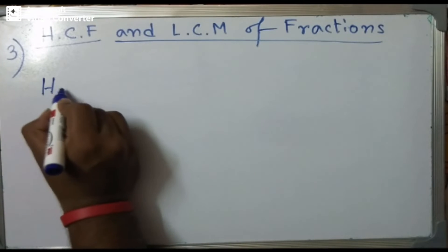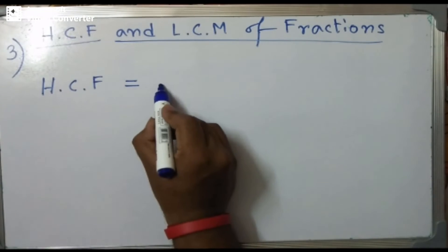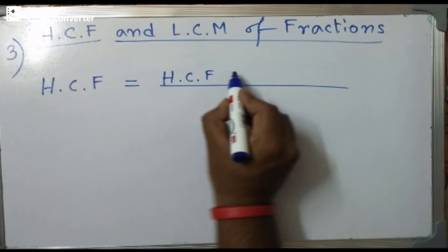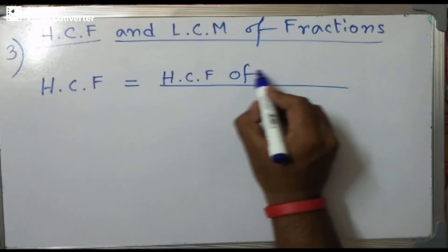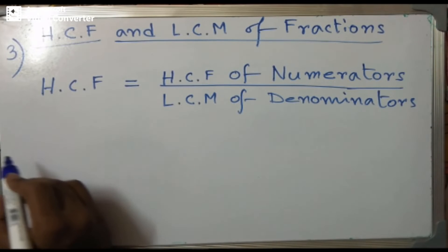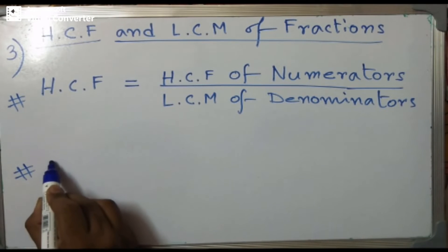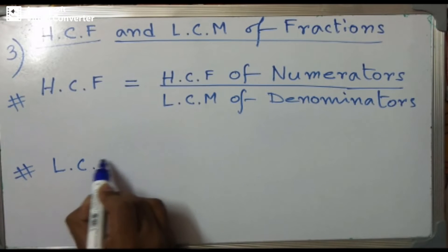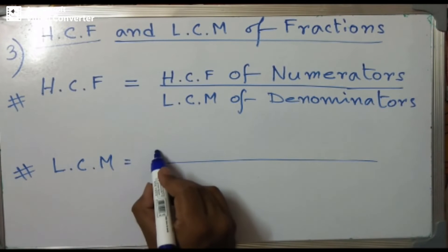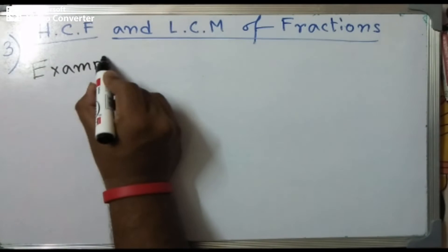The next formula covers HCF and LCM of fractions, which comes up many times in exams. To find the HCF of fractional values, use: HCF of numerators divided by LCM of denominators. For LCM of fractional values, it is: LCM of numerators divided by HCF of denominators. Please follow the same process for both.